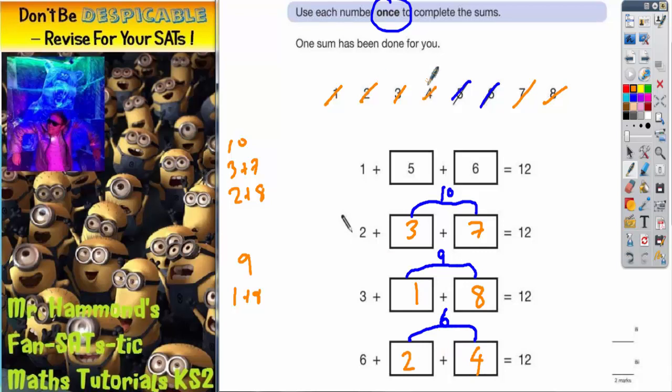Okay, so let's just double check. So 2 plus 3 is 5, plus 7 is 12, so that one works. 3 plus 1 is 4, plus 8 is 12, so that one works. And 6 plus 2 is 8, plus 4 is 12, so that one works.